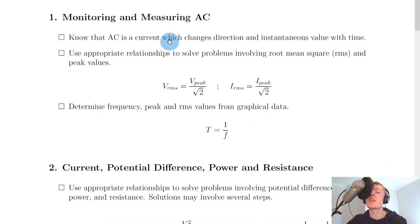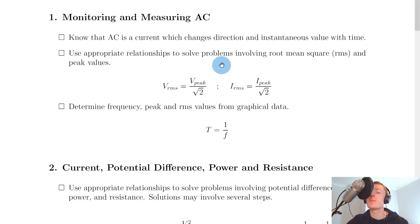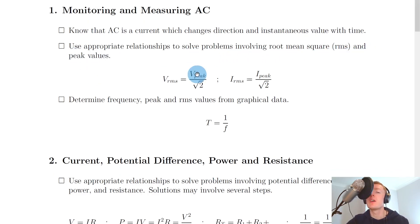In the first section, monitoring and measuring AC, you need to know that AC is a current which changes direction and instantaneous value with time. This is basically just the definition of alternating current, and because that current is changing over time, its instantaneous value is going to change over time. You also need to be able to use appropriate relationships to solve problems involving root mean square (RMS) and peak values.